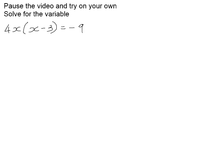Step 1 is to get this into standard form, so it's not equated to 0 at the moment, so we're going to need to multiply out. 4x times x is 4x squared, 4x times negative 3 is negative 12x. I'm going to add the 9 to both sides, and that will give me 0 on the right-hand side.